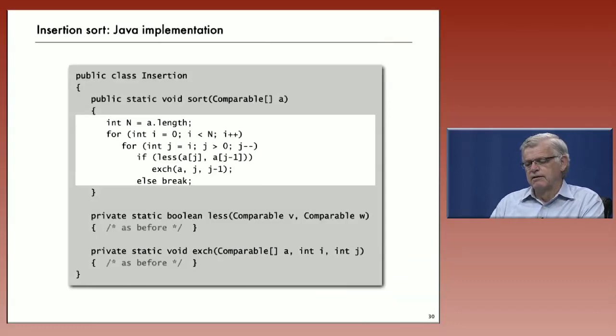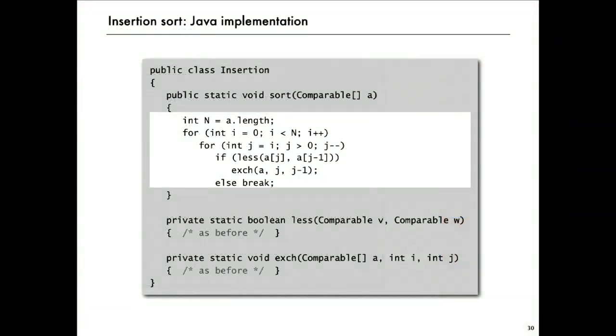And that immediately gives this code for insertion sort, which is similar to our code for selection sort, and just as simple. It's got two nested for loops, selection sort had two nested for loops, a test, a comparison, and an exchange inside the for loop. And that's a fine implementation of an elementary sorting method.